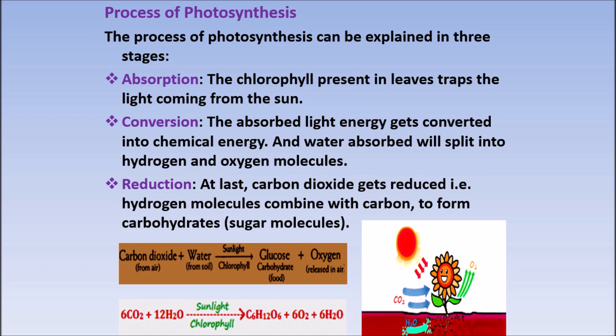Process of Photosynthesis — photosynthesis kaise hota hai. The process of photosynthesis can be explained in three stages. Teen stages mein hum isko samjhte hain. First: Absorption — chlorophyll present in leaves traps the light coming from the sun. Chlorophyll, chloroplast ke inside mein locked hota hai, wo kya karta hai — jo sunlight aati hai usse light ko absorb karta hai. Then: Conversion — the absorbed light energy gets converted into chemical energy, and water absorbed will split into hydrogen and oxygen molecules.